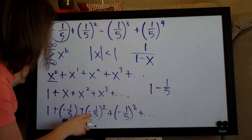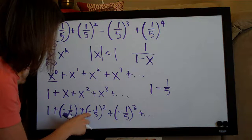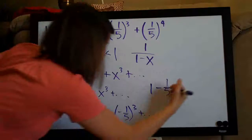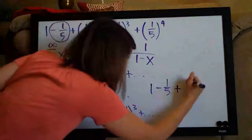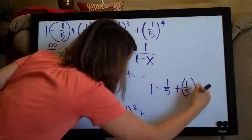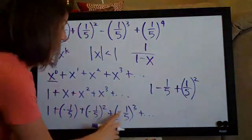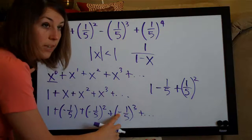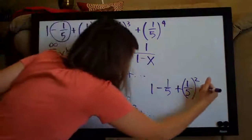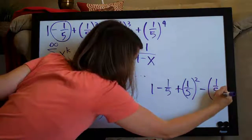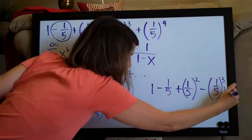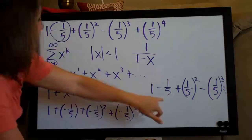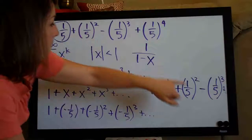Continuing: negative one-fifth squared — since the negative sign is squared, it becomes positive — so we get plus one-fifth squared. Then negative one-fifth cubed — negative times negative is positive, times negative again is negative — so we get minus one-fifth cubed, and so on. So we have 1 minus 1/5 plus 1/5 squared minus 1/5 cubed, which matches our original series.